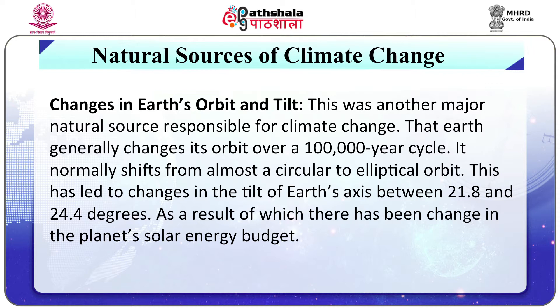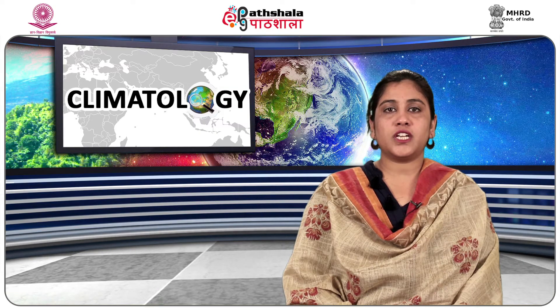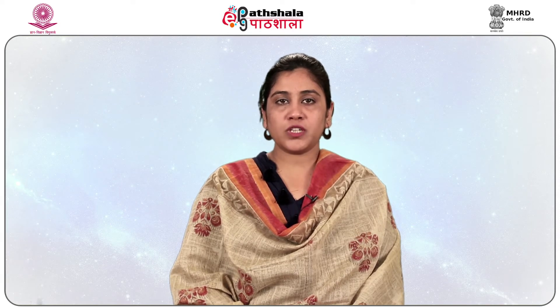Changes in Earth's orbit and tilt. This was another major natural source responsible for climate change. The Earth generally changes its orbit over a 100,000-year cycle, normally shifting from almost a circular to an elliptical orbit. This has led to changes in the tilt of Earth's axis between 21.8 and 24.4 degrees, resulting in a change in the planet's solar energy budget. The northern hemisphere is now closer to the sun in winter and farther away in summer, receiving 5% less sunlight in summer than 12,000 years ago. This is known as the Milankovitch cycle, named after Serbian geophysicist and astronomer Milankovitch who theorized this phenomena.